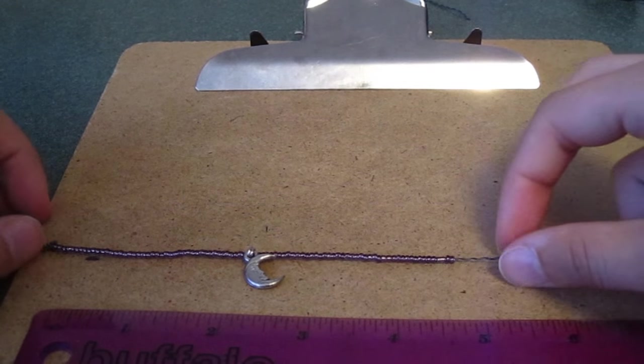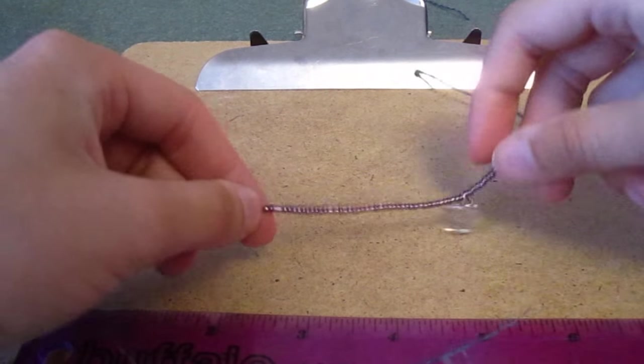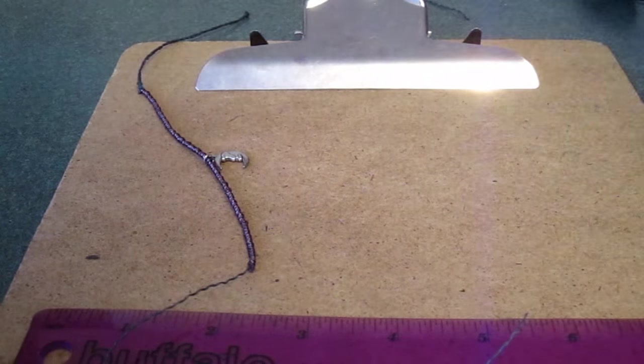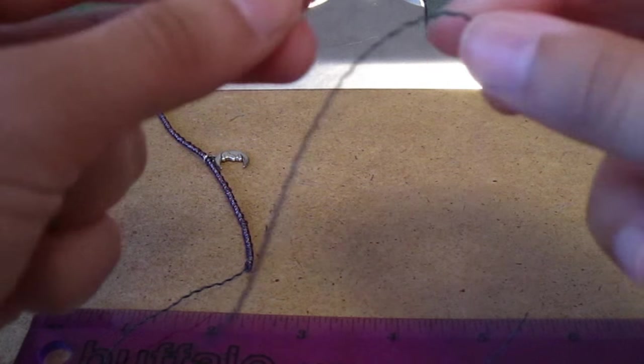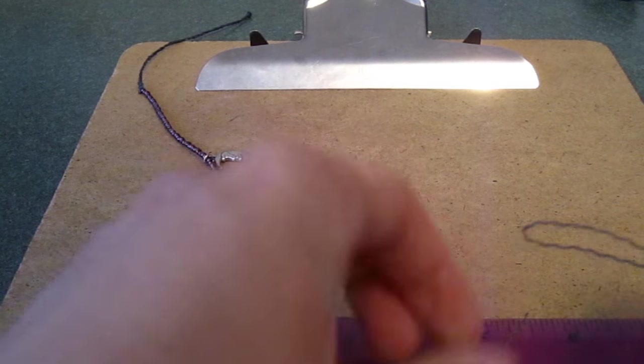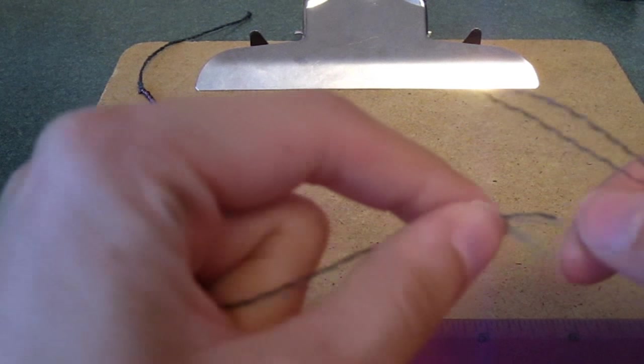Once you are done beading, make several single knots onto the cord you have been threading beads onto. Taking the second half of the 12 inch cord from earlier, fold it in half and make two square knots just above the knots you made in the beading cord.